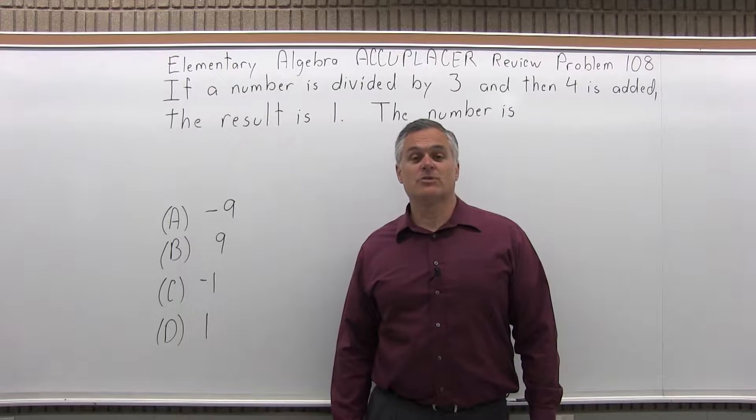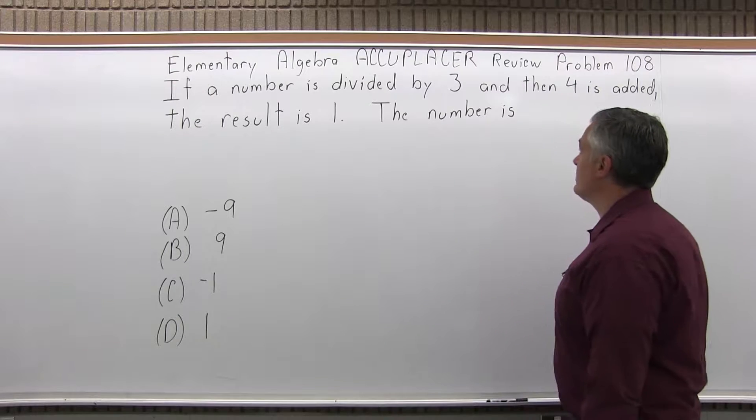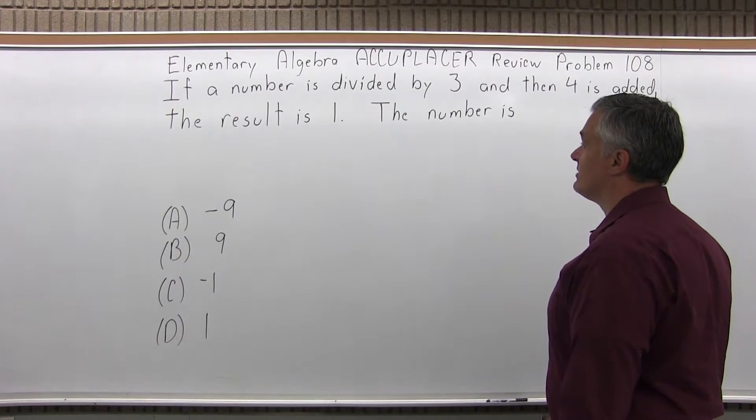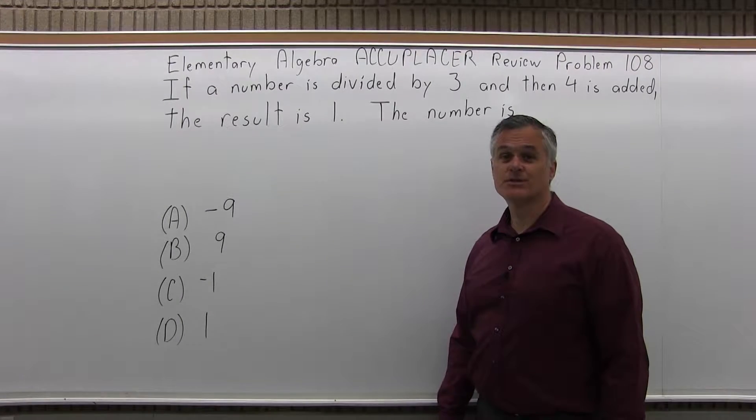This is the Elementary Algebra Accuplacer Review, Problem 108. It says if a number is divided by 3 and then 4 is added, the result is 1. The number is, and we have a few options to choose from.